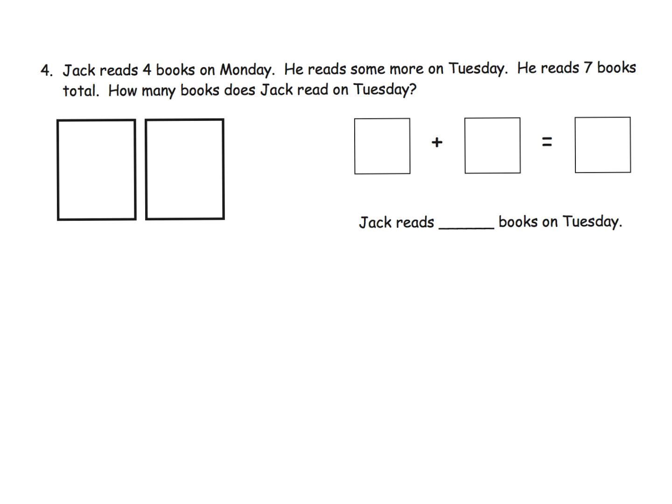So we begin, I'm going to begin with Jack reads four books on Monday, so I'm going to record the number four here. And then it says he reads some more on Tuesday. Now, I happen to know that that's going to be this number right here. And he reads seven books total. So, in a part-part-whole kind of world, we could think of this as, we have four here, we don't know how many are here, and we have seven total. So, if I wanted to, I could fill in this number sentence over here with the seven goes right here, and the four could go right here. And we don't know this number, we don't know this number, we don't know this number. They're all the same number.